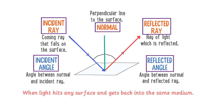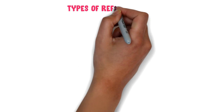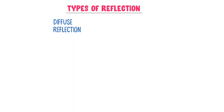Remember that when light hits any surface and gets back into the same medium, it is called reflection of light. There are mainly two types of reflection: diffuse reflection and specular reflection.